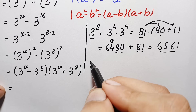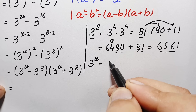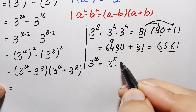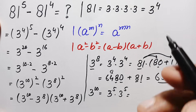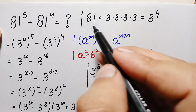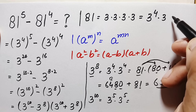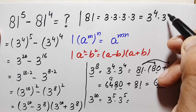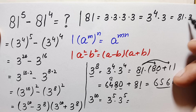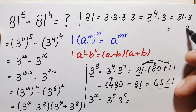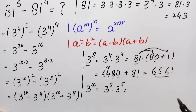Now we find the value of 3 to the power 10. We write it as 3 to the power 5 times 3 to the power 5. The value of 3 to the power 4 is 81, so 3 to the power 5 is 3 to the power 4 times 3, which is 81 times 3. Now 3 times 1 is 3, and 3 times 8 is 24, so the value of 3 to the power 5 is 243.